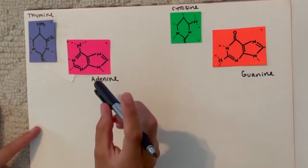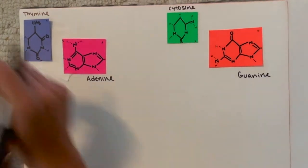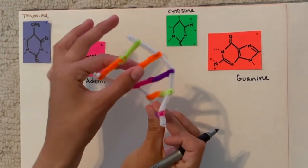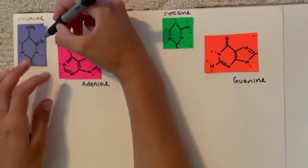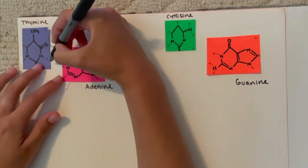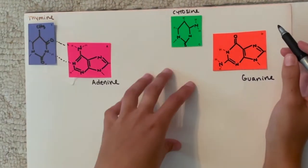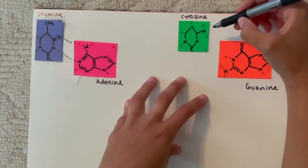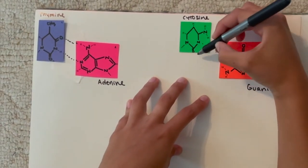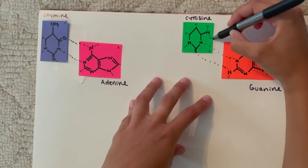These are the hydrogen bonds between the base pairs in the double helix, these bonds here. So thymine and adenine have two bonds here and here. Then cytosine and guanine have three bonds here, here, and here.